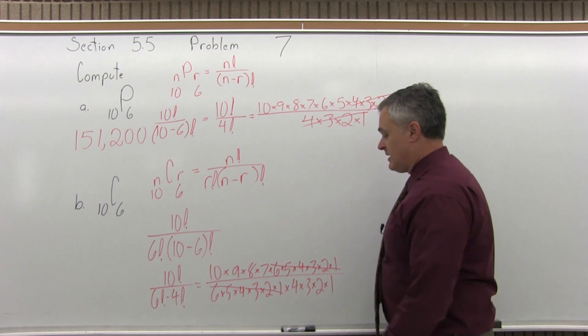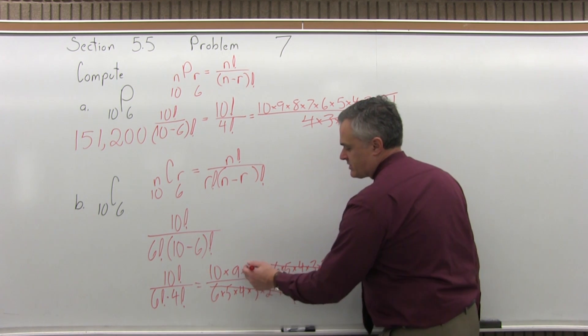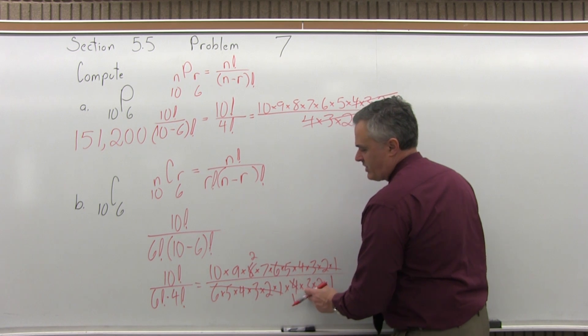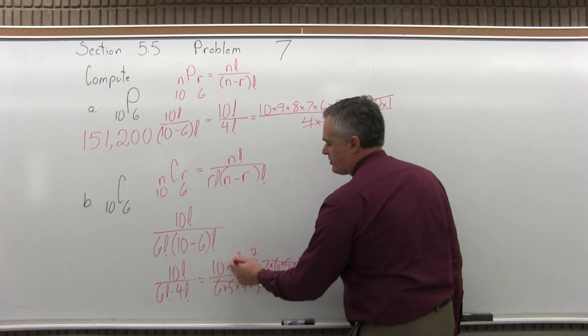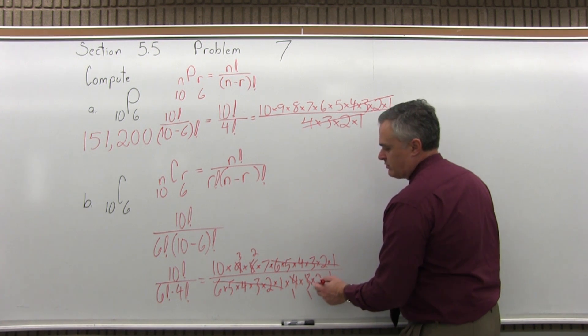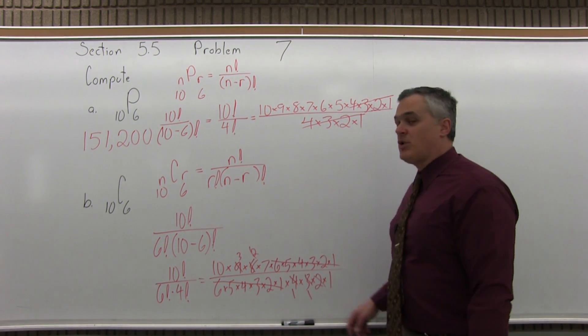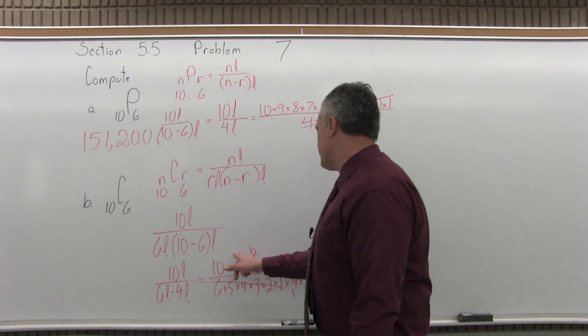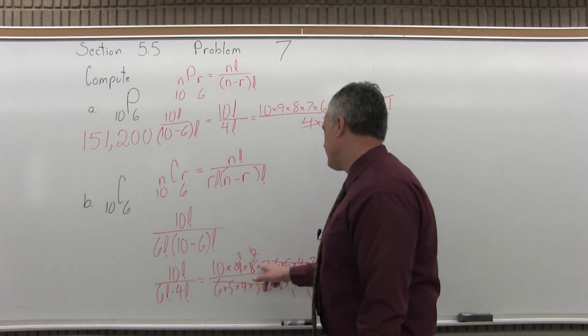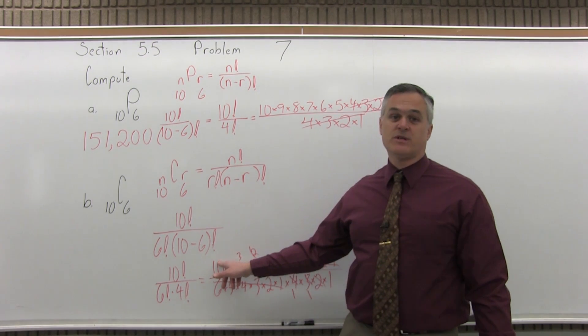Or you can still cancel things. Let's do 4. 4 goes into 4 once, goes into 8 twice. 3 goes into 3 once, it goes into 9 three times. 2, well, 2 on the top, 2 on the bottom, let's just cancel those. So now everything on the bottom is canceled. You're left with 1 on top. You're multiplying 10 times 3 times 7. So 3 times 7 is 21, times 10 is a 21 with a 0 on the end or 210.